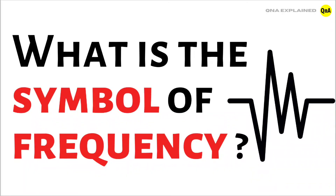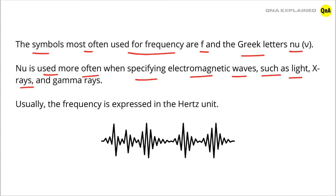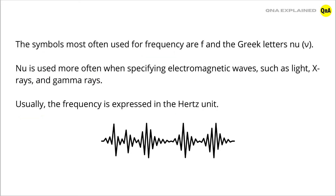What is the symbol of frequency? The symbols most often used for frequency are F and the Greek letter NU. NU is used more often when specifying electromagnetic waves such as light, x-rays, and gamma rays. Usually, the frequency is expressed in the Hertz unit.